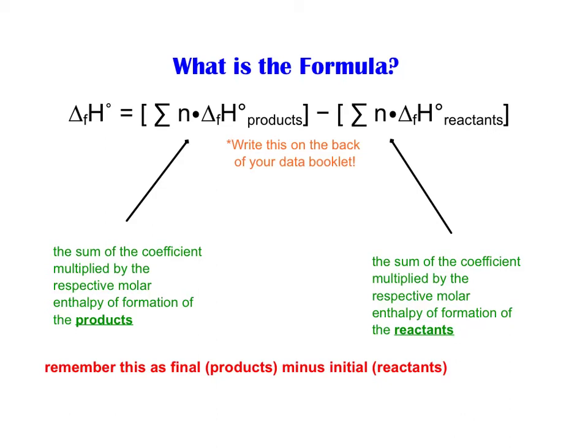Minus the sum of the coefficient from a balanced equation multiplied by its respective molar enthalpy of the reactants. So again, it's final minus initial as we always know it to be. Make sure you write down this equation, or at least understand it well enough to implement it everywhere where it's needed.